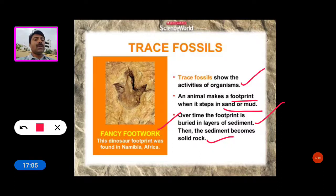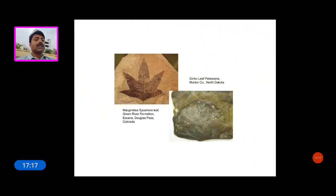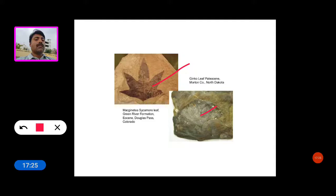Here are some trace fossil photographs of plants, including a Ginkgo biloba leaf and a marginata sycamore leaf.